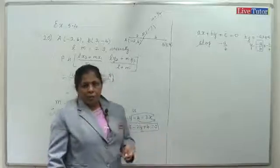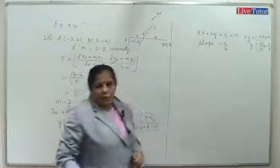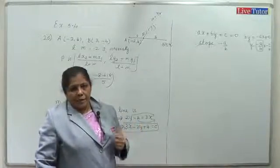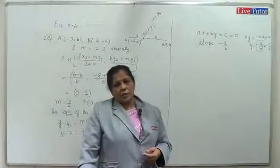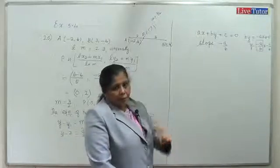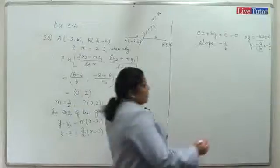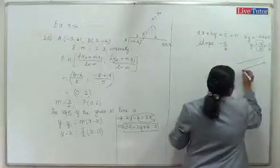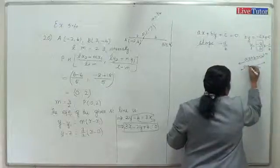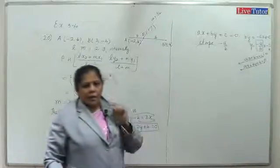If a line is parallel to ax plus by plus c equals 0, it also has slope minus a by b. When two lines are parallel, they have equal slopes. So a parallel line has the form ax plus by plus k equals 0 — only the constant changes.